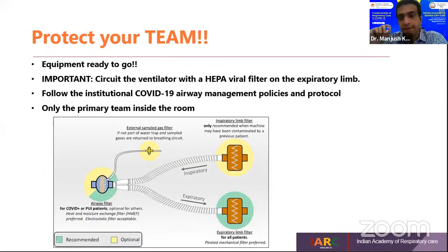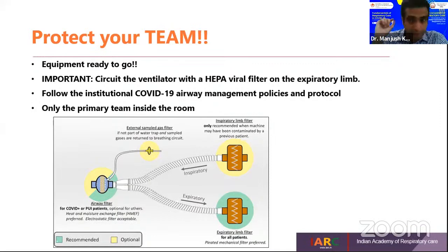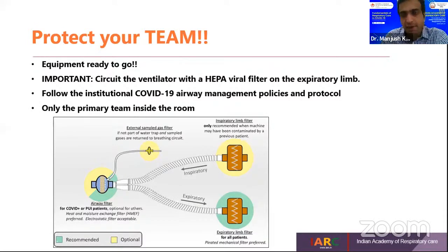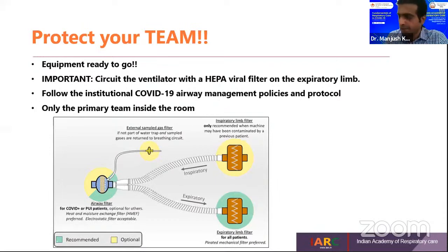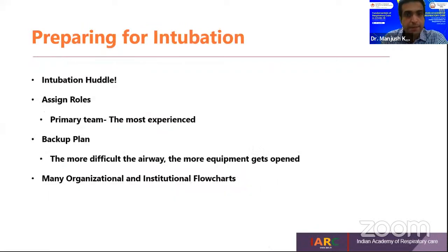When it comes to team protection, respiratory professionals involved in respiratory care need to understand the need for HEPA viral filters. When intubating, the person will need the ventilator prepared with a HEPA viral filter on the exhalation limb toward the ventilator and one toward the interface — the endotracheal tube. Follow institutional COVID-19 airway management policies. Only the primary airway management team should be inside the room.